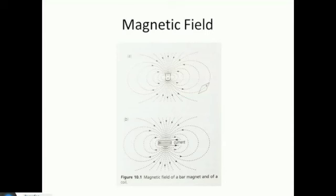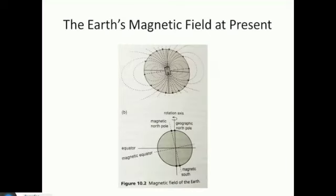Similar if you've got a coil with a current in it. This is pretty much what we estimate the Earth's magnetic field to look like. So this is the Earth — the bar magnet is slightly offset to the side, and you've got these field lines coming in and out. That's why the geographic North Pole is slightly different from the magnetic North Pole.